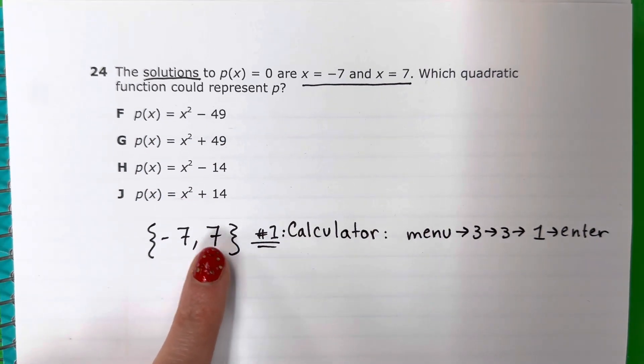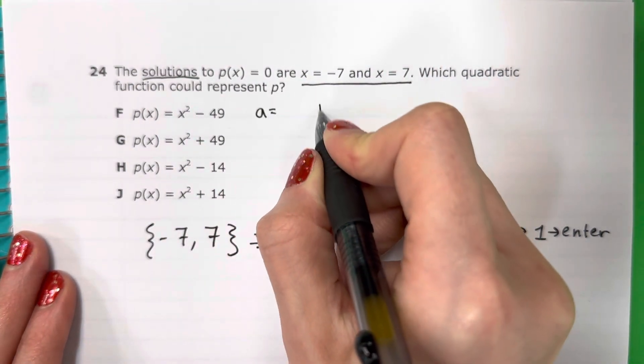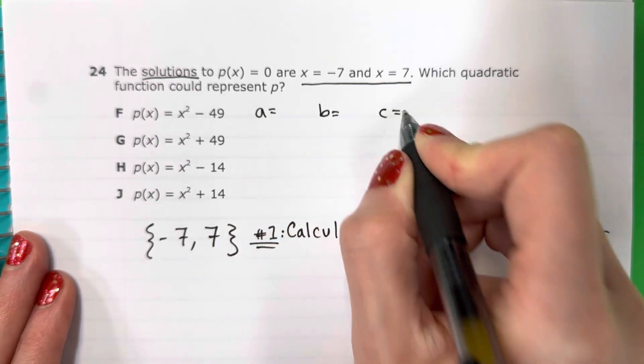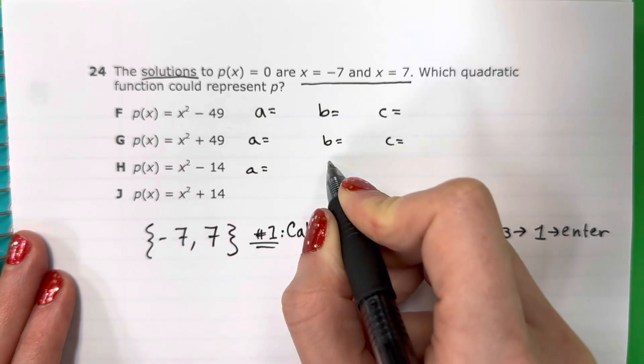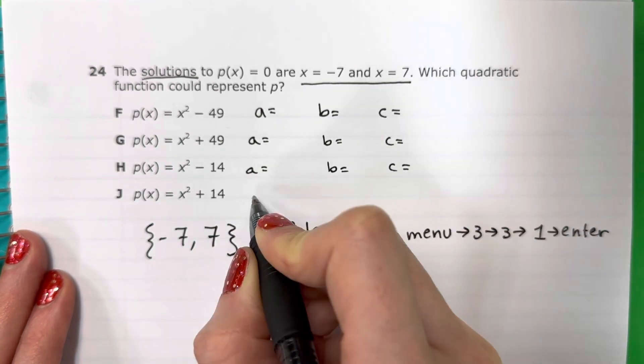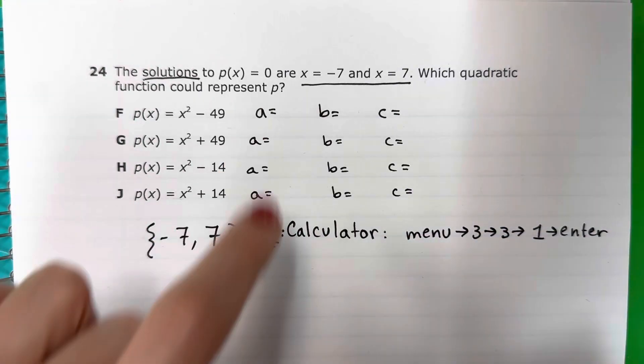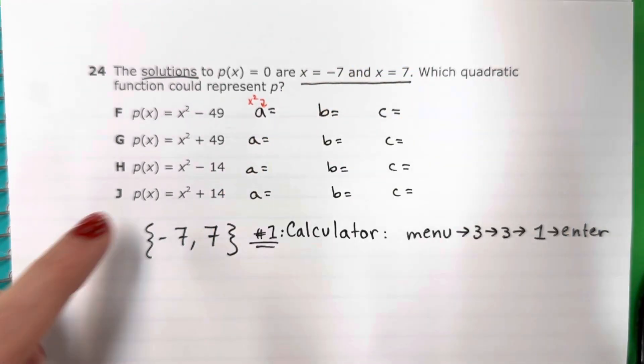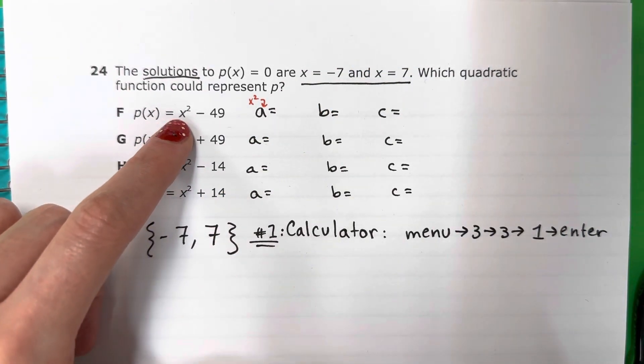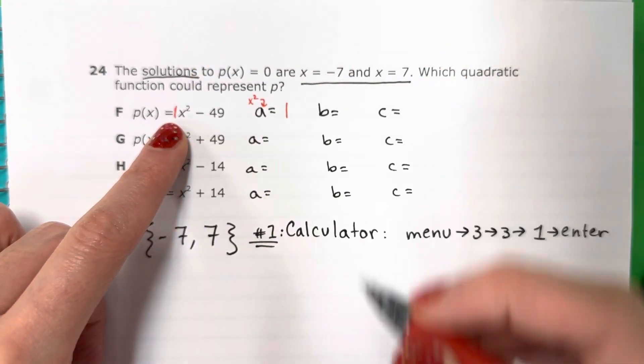We're going to see which one will give me this. Before we do that, we're going to identify our ABC for each one, por cada una. A is the number with the x squared. Which number is with x squared? If there's no number, it's 1. So A is 1.